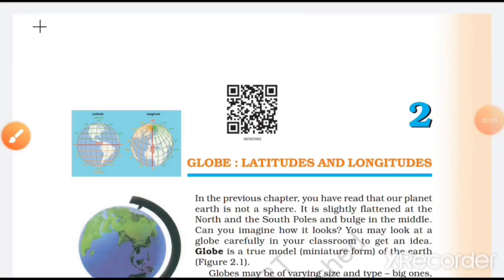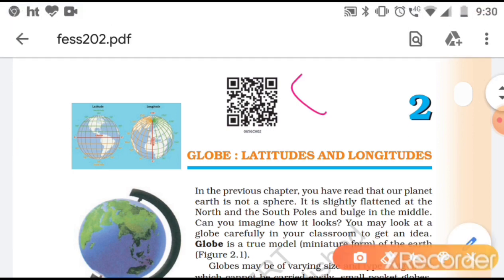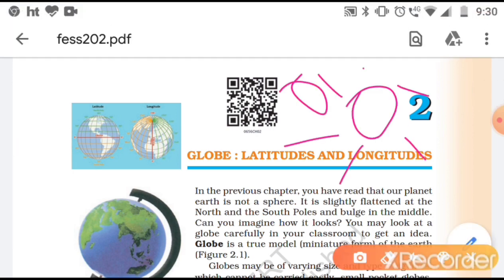Hi everyone, my name is Simran Sengar and I have started a series on class 6 geography. We are on chapter number 2: Globe, Latitudes and Longitudes. In the previous chapter, we discussed how our earth looks and what the other celestial bodies in the solar system are.